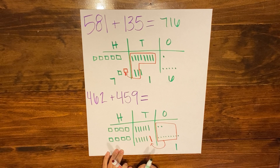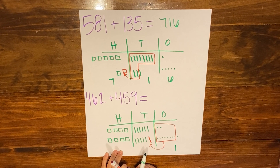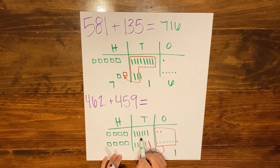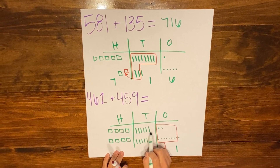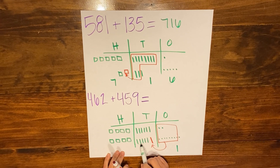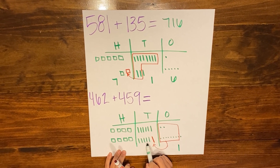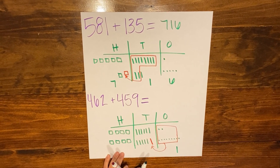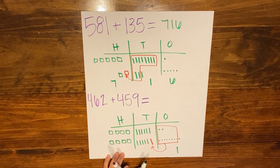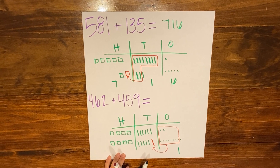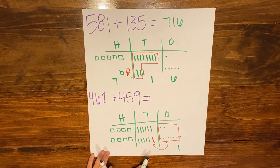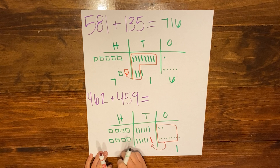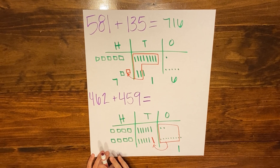Now I can move to my tens column and add those together: 1, 2, 3, 4, 5, 6, 7, 8, 9, 10, 11, 12. I cannot have twelve tens in the tens column, so I'm going to need to regroup again — this time taking ten tens and making them into one hundred.